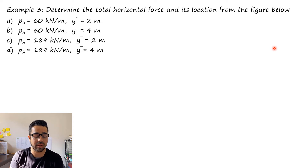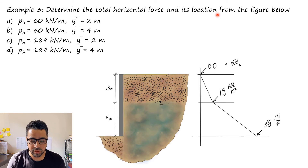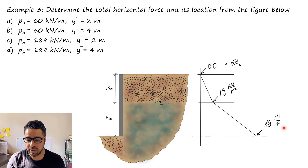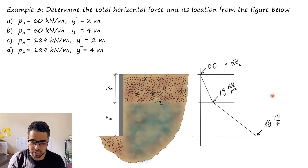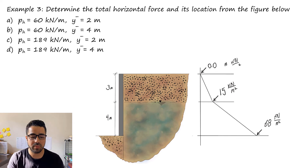Now Example 3. In Example 2 we found the total stresses. In Example 3 they are looking for the horizontal force and its location from the figure. The stress diagram is what we found previously — now we need the total force applied on that wall and where it acts. This is very common in the FE and PE exams.